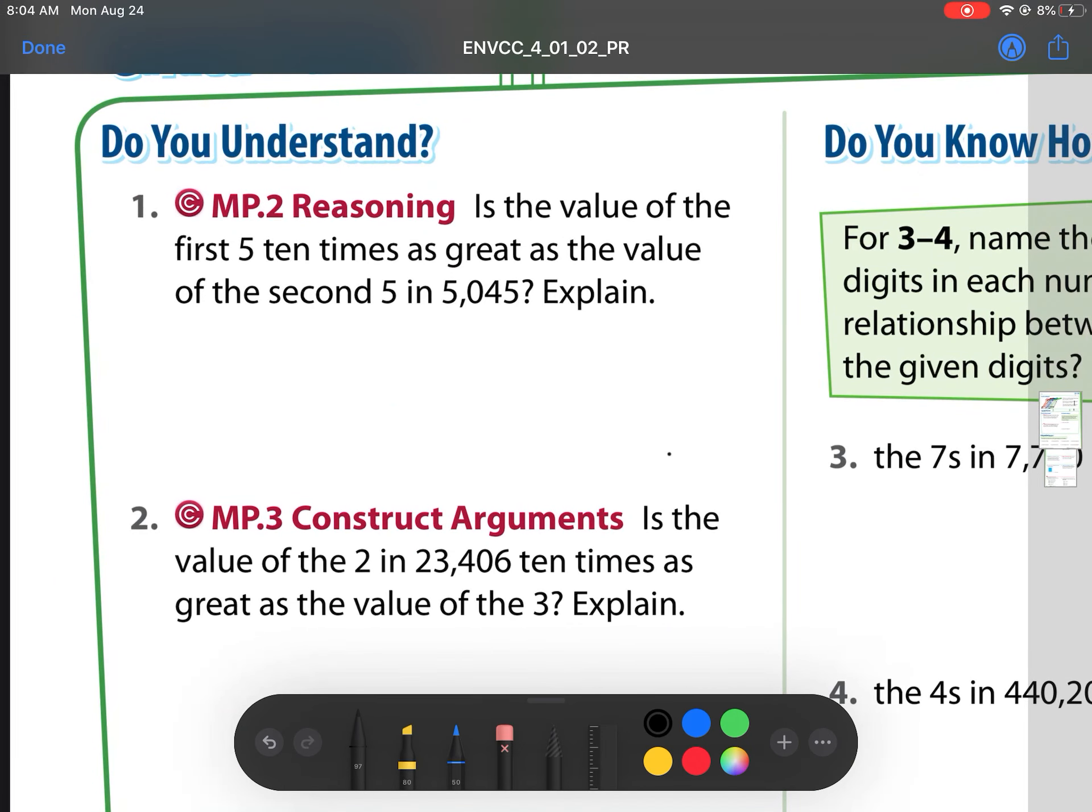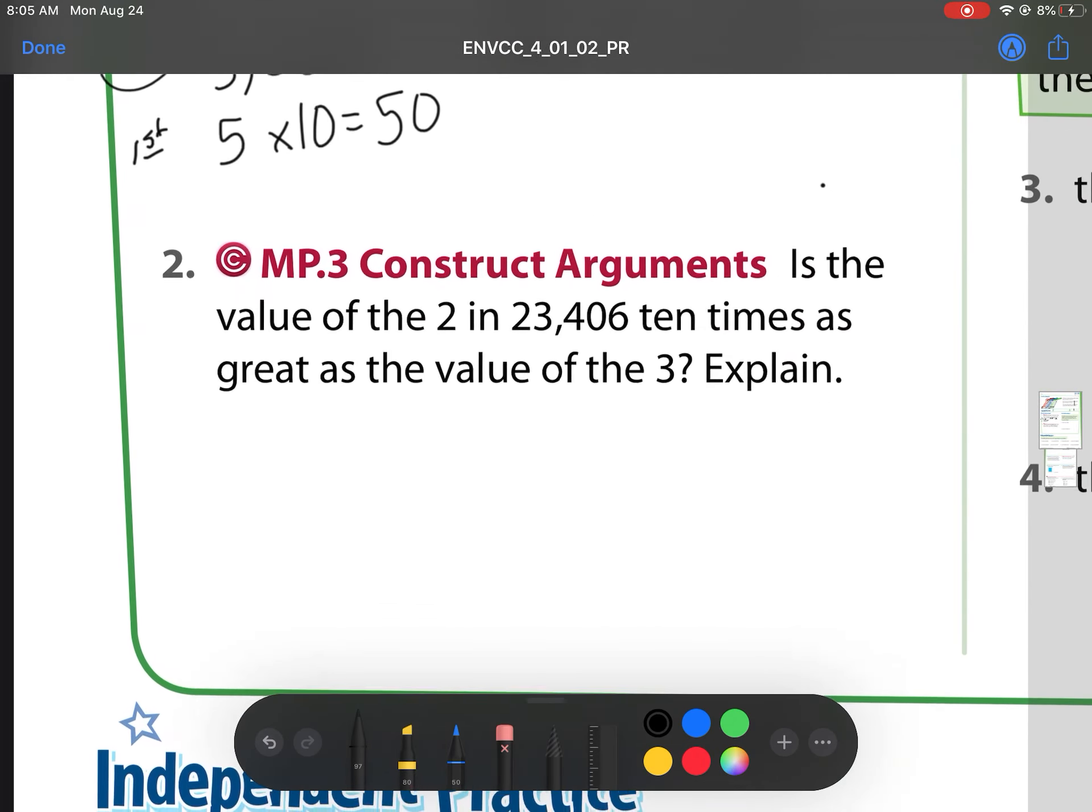So on to number one. Is the value of the first five ten times as great as the value of the second five in 5,045? Let's check. The value of the second five is 5,000. The value of that first five is five. And it's saying it's ten times as great. So what is ten times as great? Well, that's 50. So our answer is no. It is not. And we see it's 50 versus 5,000. So it's not ten times as great. It's a hundred times.